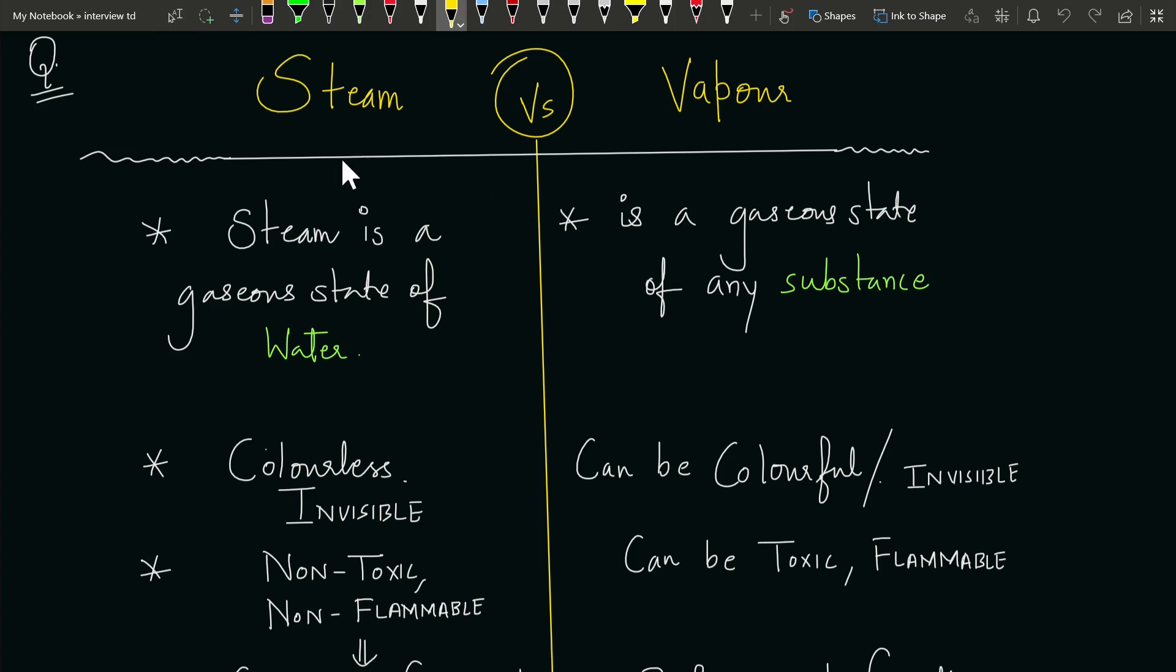First, what is steam? Steam and vapor both are gaseous states, but steam is a gaseous state of water and vapor can be of any substance. Vapor is a gaseous state of any substance.